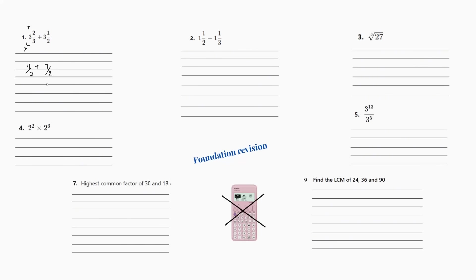Now it's out of the mixed number, we can start solving it. We need to get the denominators the same, and to do that we times across the opposite sides diagonally. So eleven times two gives twenty-two, and seven times three gives twenty-one. The denominators: three times two is six. Now both denominators are the same, so twenty-two plus twenty-one is forty-three — forty-three over six.